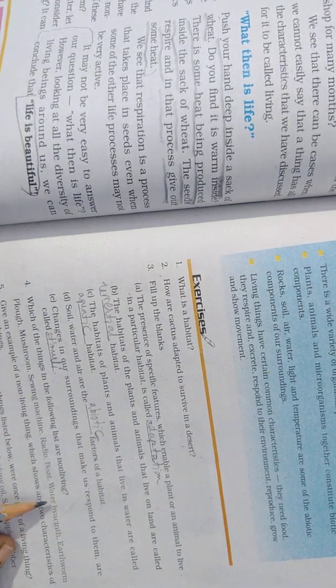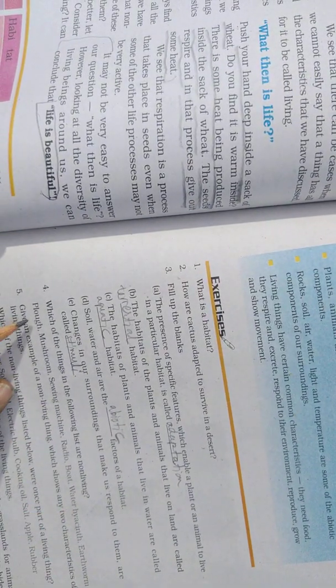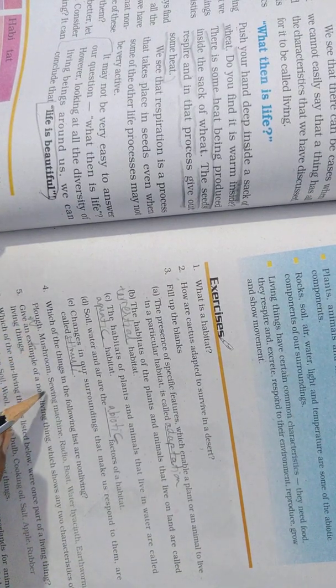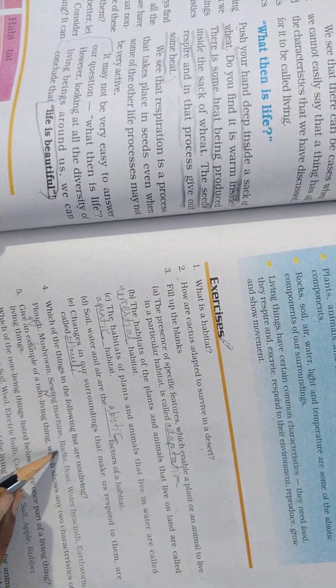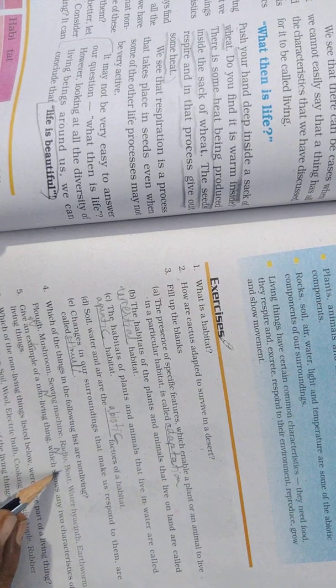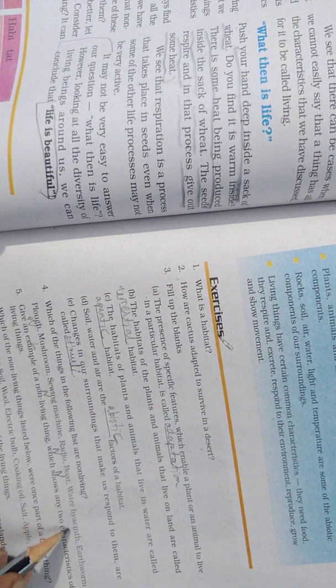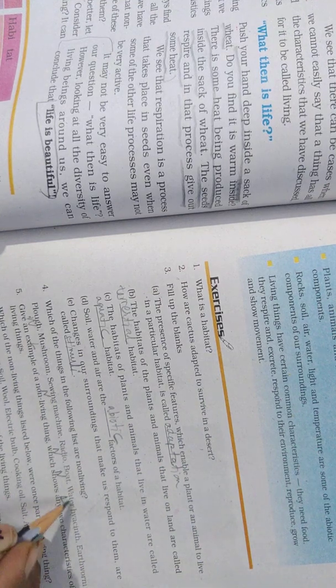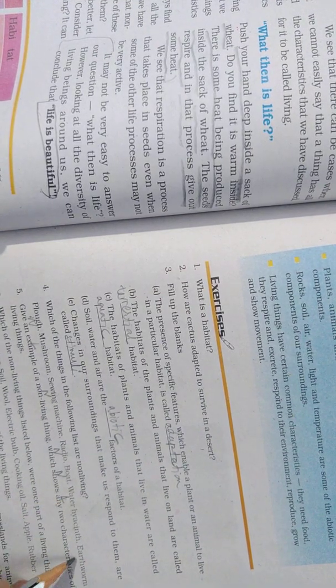Which of the following are non-living? Plywood is non-living. Mushroom is living. Sewing machine is non-living. Radio is non-living. Boat is non-living. Water hyacinth is living. This is an organism. Earthworm is living.